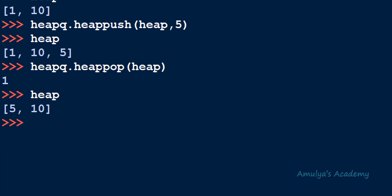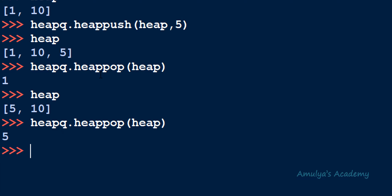This is extracting the minimum value from the heap — since it is a min heap, we extract the minimum root node. If I call it again, 5 will be deleted as the current root node. It returns the value of the smallest node and deletes it from the binary heap. So this is about the heappop function.